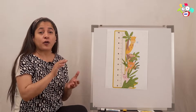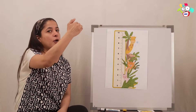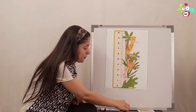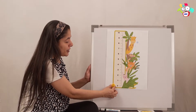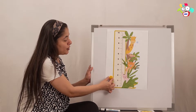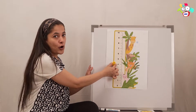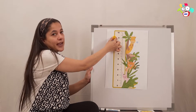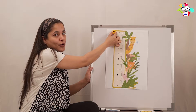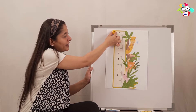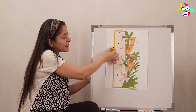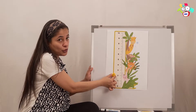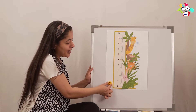So we are all going to count in ascending order and in descending order. Are we ready? Come on, let's start: 0, 1, 2, 3, 4, 5, 6, 7, 8, 9, and 10. And now let's go down: 10, 9, 8, 7, 6, 5, 4, 3, 2, 1, and 0.